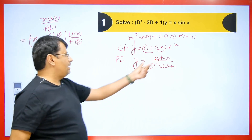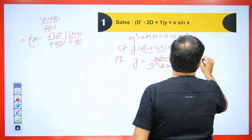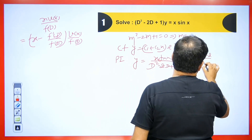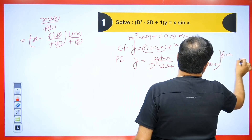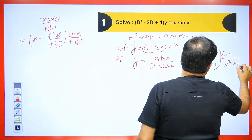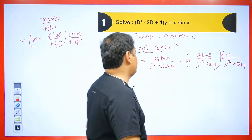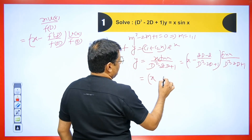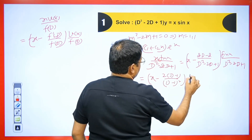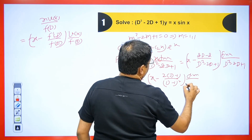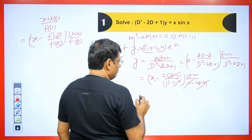This is multiplied by sin(x) upon (D²−2D+1). We will solve this and note that we place −1 instead of D². So we get x, and we take −2 common here, giving (D−1)/(D−1)² times sin(x) — putting −1 for D². We know the −1 cancels with 1, and (D−1) cancels with (D−1).